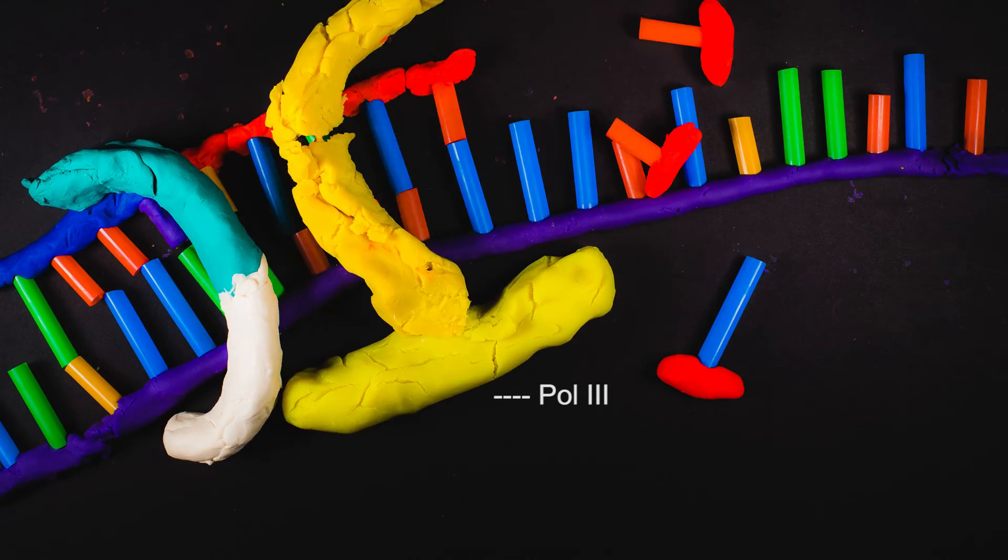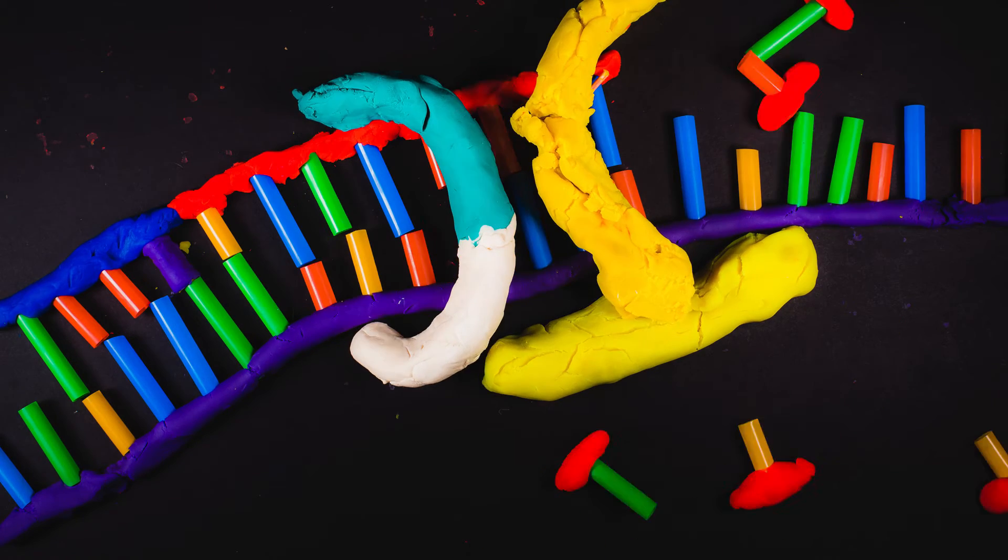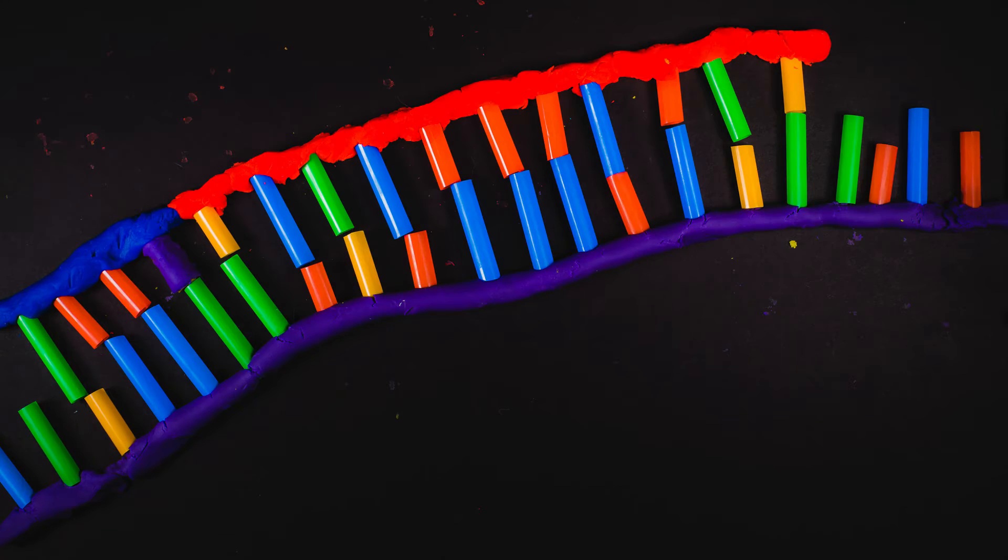The beta-clamp binds tightly to the DNA while also being bound to POL3. The beta-clamp then holds POL3 while it slides along the DNA. We know how important the beta-clamp is for enhancing the DNA replication process through experiments that were performed to test those properties.